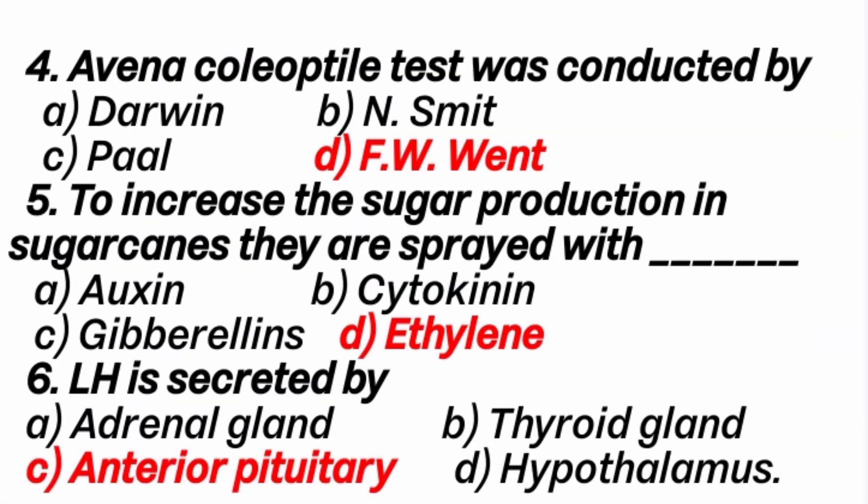4th question: Avena coleoptile test was conducted by? Answer is D option: F.W. Went. 5th question: to increase the sugar production in sugar cane, they are sprayed with — answer is D option: Ethylene.